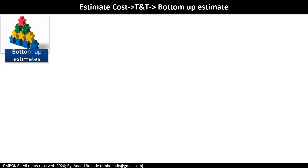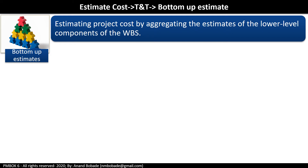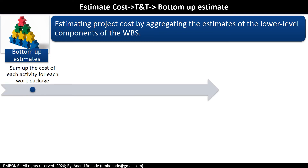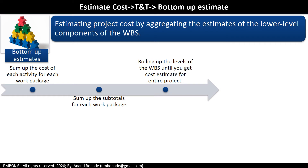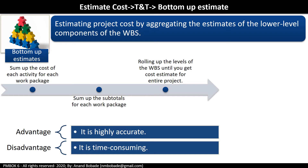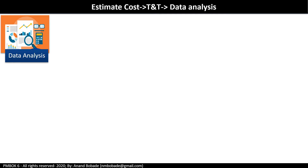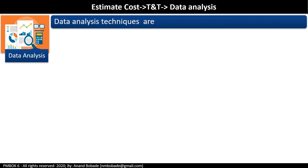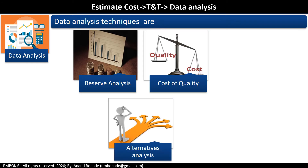Bottom-up estimation: you estimate project cost by aggregating estimates of the lower-level components of the work breakdown structure. First, sum up the cost of each activity for each work package, then sum up the subtotals for each work package, and roll up the WBS levels until you get a cost estimate for the entire project. The advantage is high accuracy; the disadvantage is it is time-consuming. It is the opposite of top-down techniques like analogous and parametric estimation. Data analysis tools include reserve analysis, cost of quality, and alternative analysis.